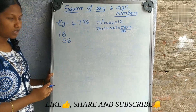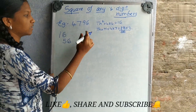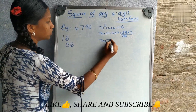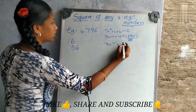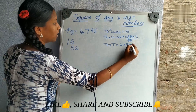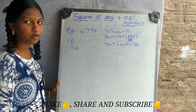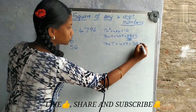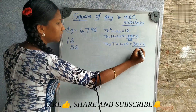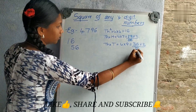Now we have to multiply the thousands digit by the tens digit. That is 4 into 9, which equals 36. Now we have to multiply the product with 2: 2 times 36 — 2 sixes are 12, 2 threes are 6 plus 1, equals 72. Write 72 here.